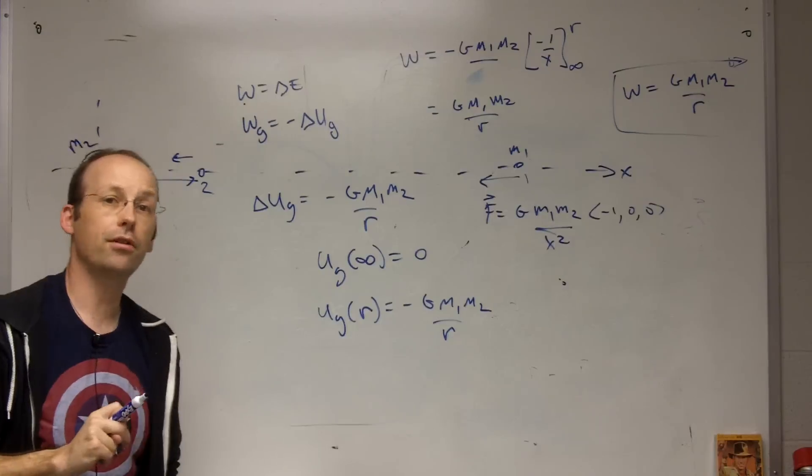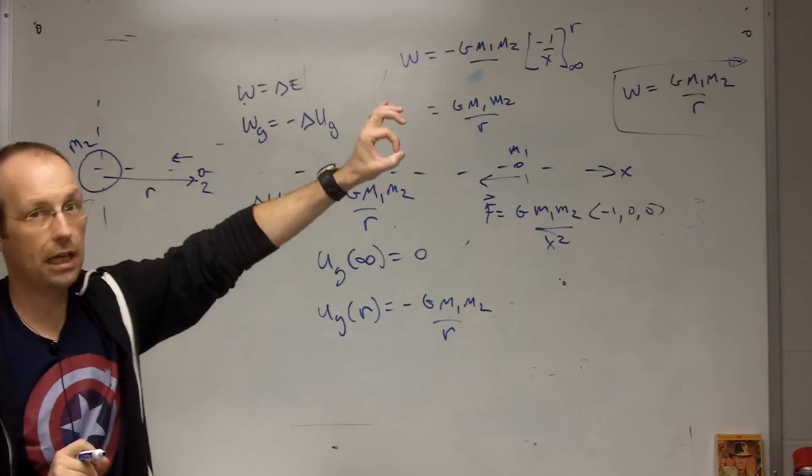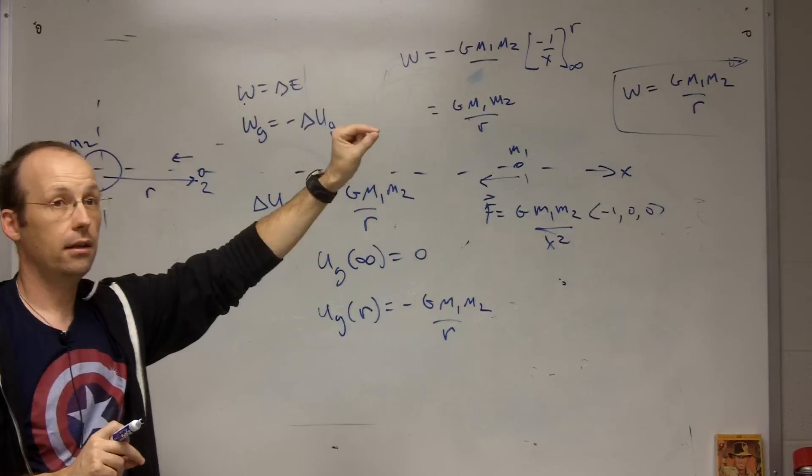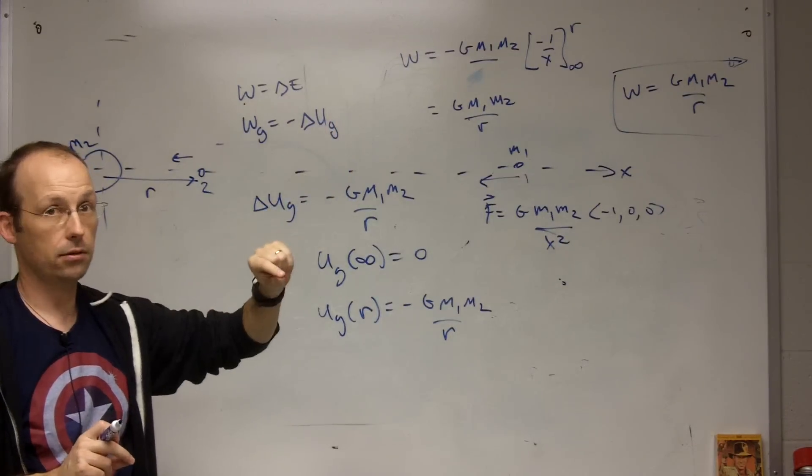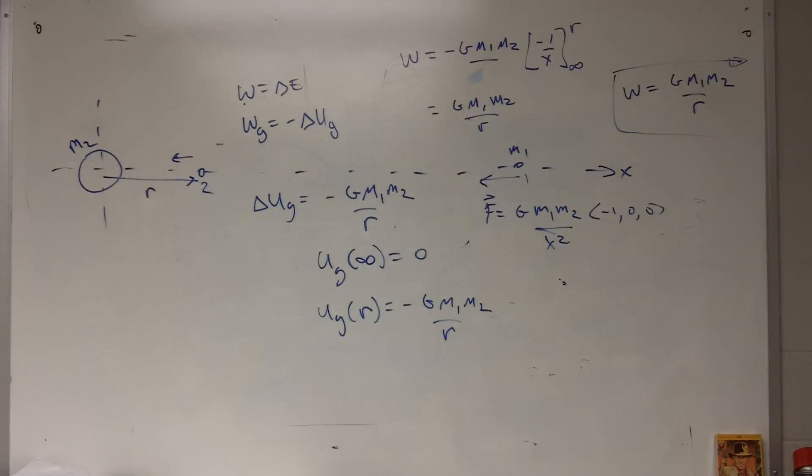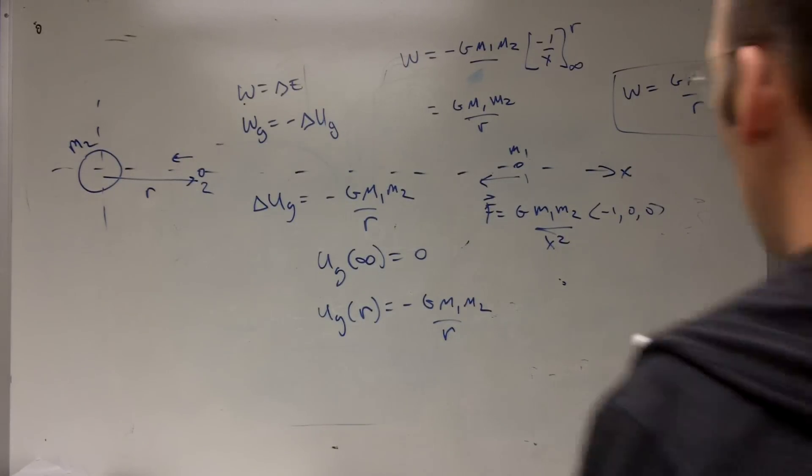then u g at r equals negative g m1 m2 over r. So this really just helps us out a little bit. We can say, what's the potential here? Even though it doesn't really mean too much, we can say that. And then we can talk about the change in potential. How much time have I used? Six minutes. Okay, let's do another problem real quick.